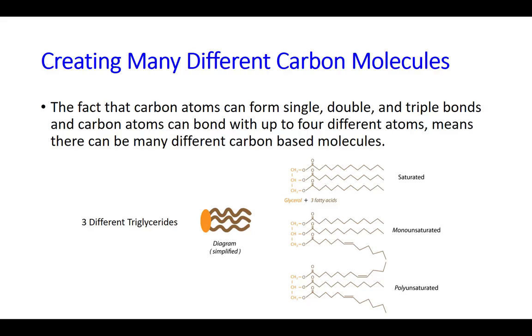The reason we bring this up is that carbon can make many different types of shapes and sizes of molecules. For example, take the fat molecule triglyceride below, and you notice where it says saturated, those are all single bonds, so it has kind of a straight shape.